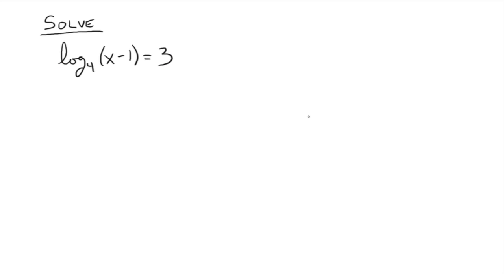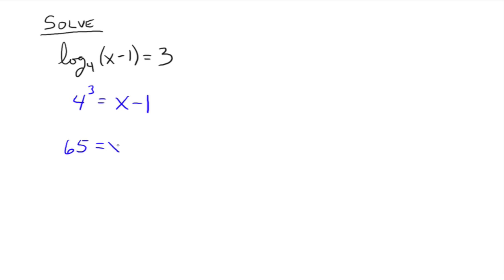So log base 4 of x minus 1 is equal to 3. This is a logarithmic equation because what you're solving for, x, is located in the argument of a logarithm. We've got one logarithm equal to one number, so we can rewrite this using the definition of a logarithm as 4 to the third equals x minus 1. Then you just solve for x, so that would be 65 equals x.